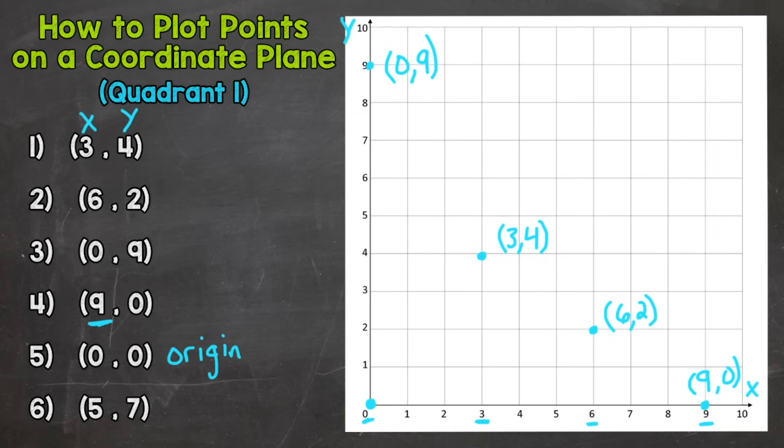Number six we have (5, 7). So over 5, up 7. So we go over 5 here and then up 7, plot our point and we'll label this point (5, 7). And I forgot to label my origin which is (0, 0).